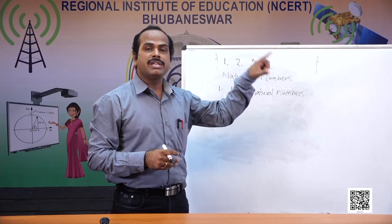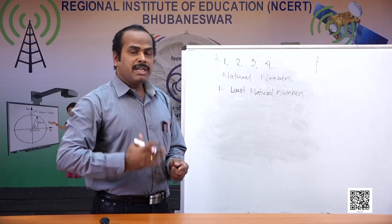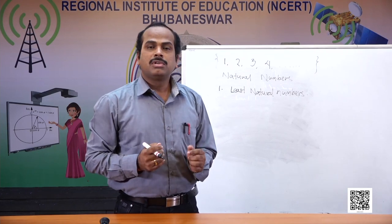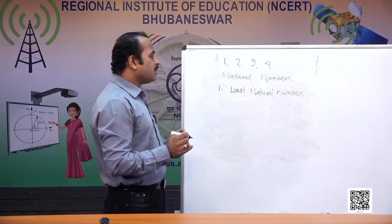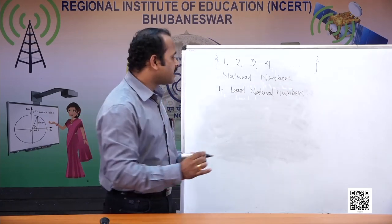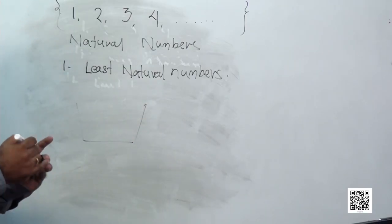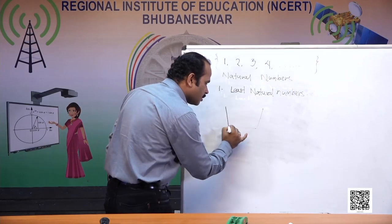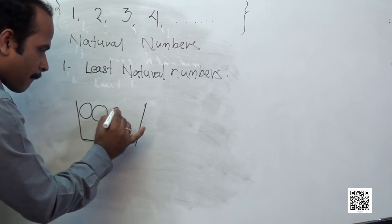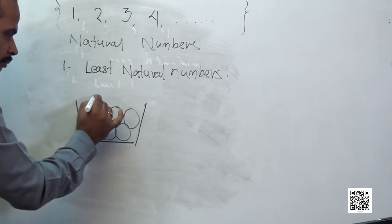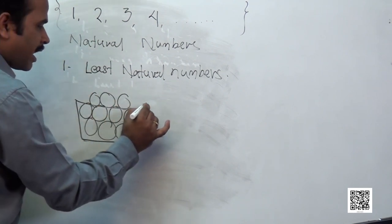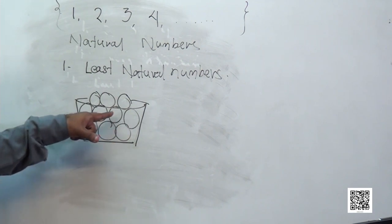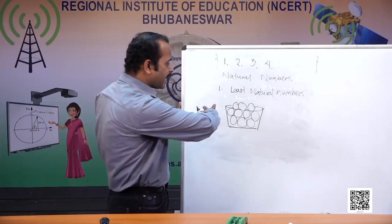After learning natural numbers, we feel that natural numbers are not always helpful to represent all things. For example, suppose there are 10 fruits in a basket. We counted them as 10 fruits because we count one, two, three, four, five, six, seven, eight, nine, ten — so 10 fruits in the basket.